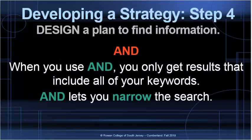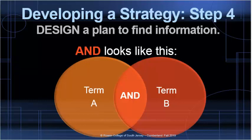Let's take a look at AND first. When you use AND, you're going to get results that include all of your keywords. This is a good way to narrow your search or to get fewer results. If we use bullying AND mental illness, the results that we're going to get are those intersecting ones in the middle, so all of our results will have both bullying and mental illness.